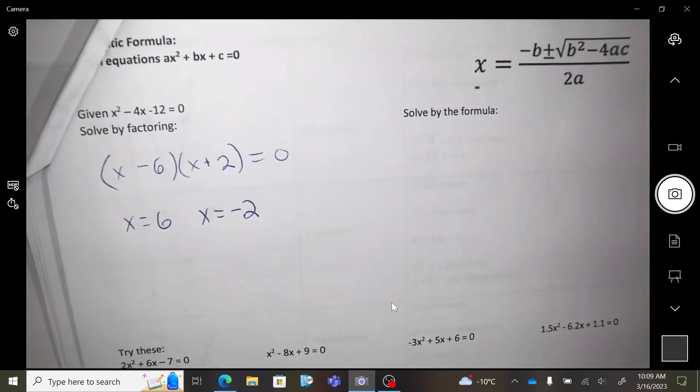So the x values are 6 and negative 2. Okay, I'm going to show you how the formula works. I obviously wouldn't pick the formula on this one because it was factorable. So if it is factorable, factoring is way faster. But let's just see that the formula will give us the same answers.